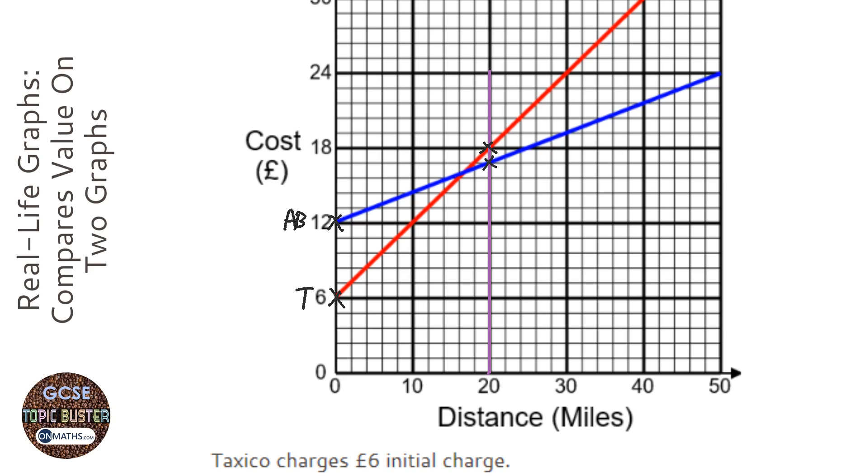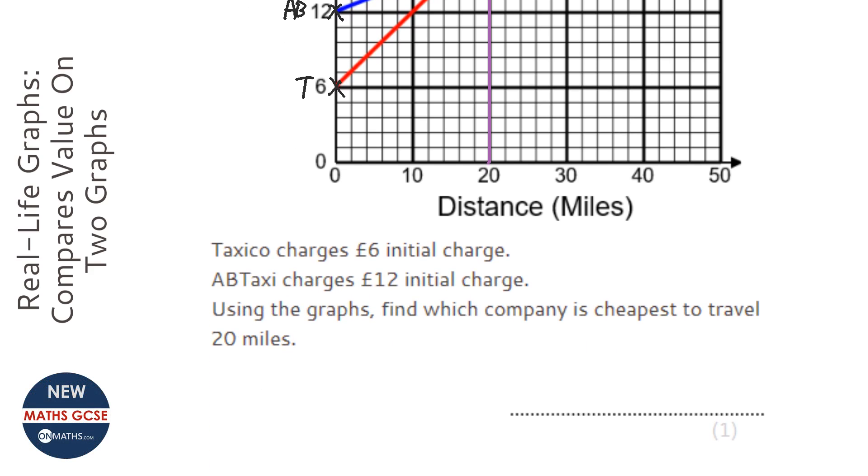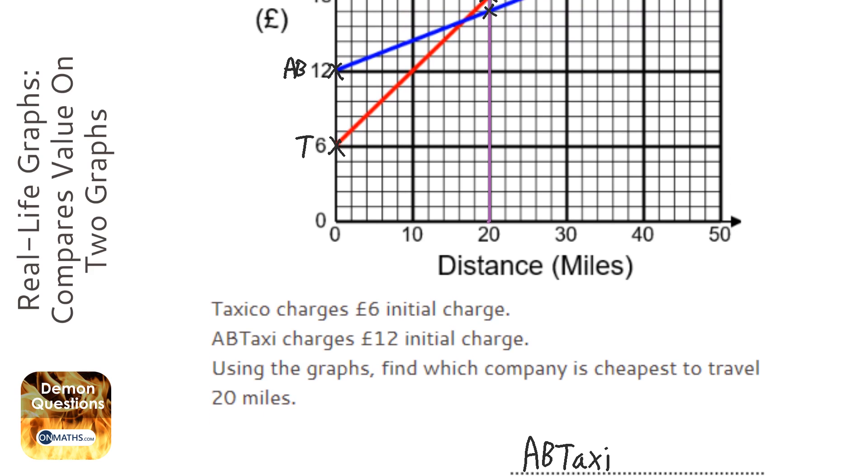If you have a look at it, AB Taxi is less than £18 and Texaco is £18. So the answer is going to be AB Taxi. And to supplement your answer, you might make reference to the actual values, but I don't think it's necessary.